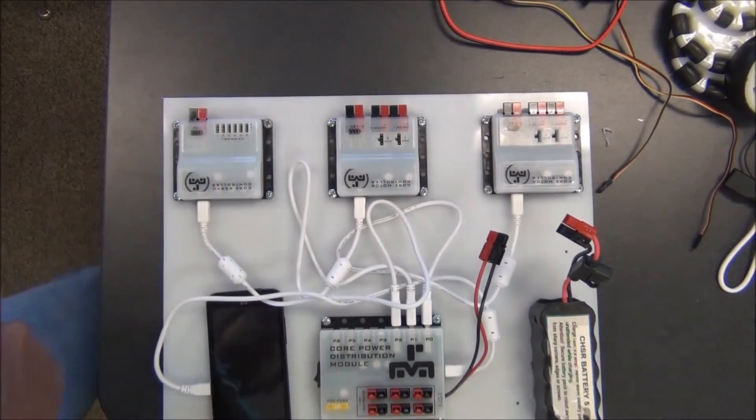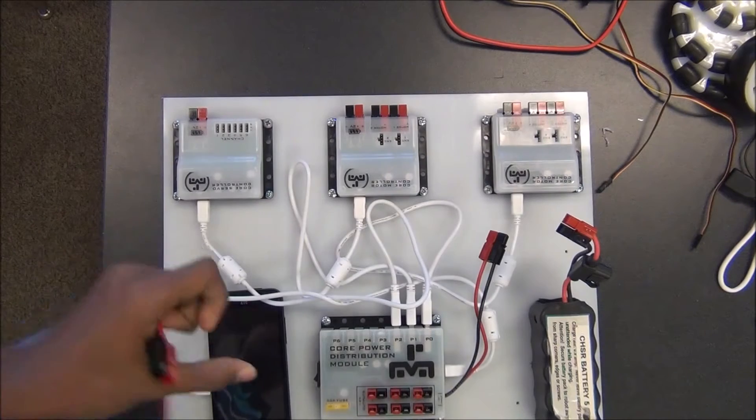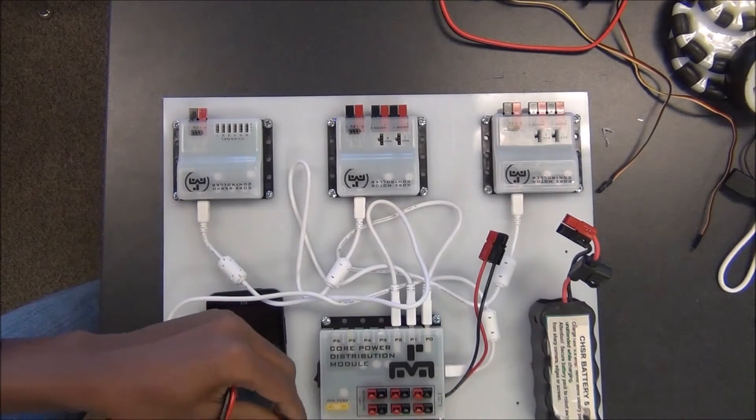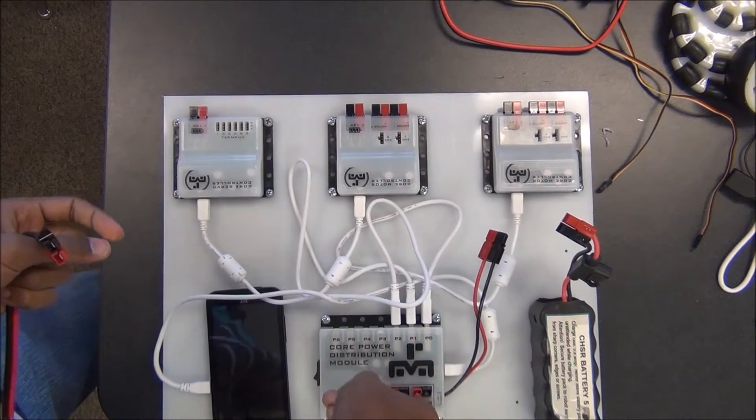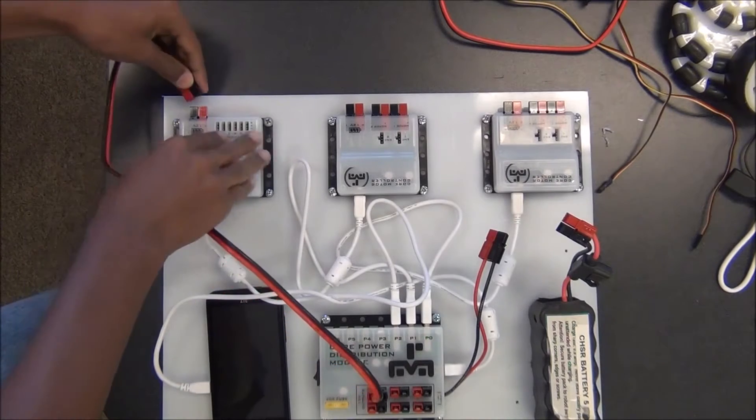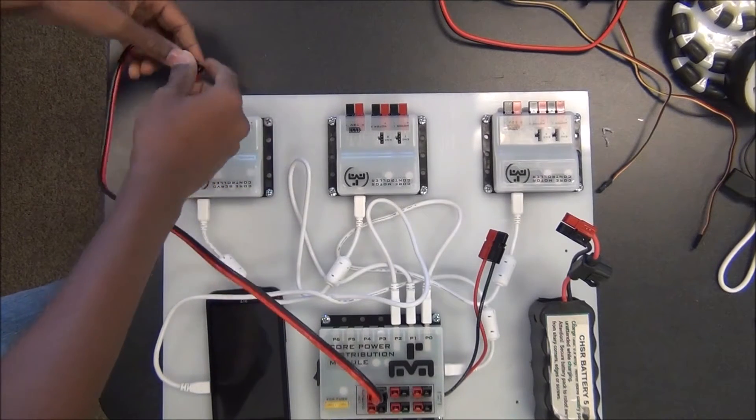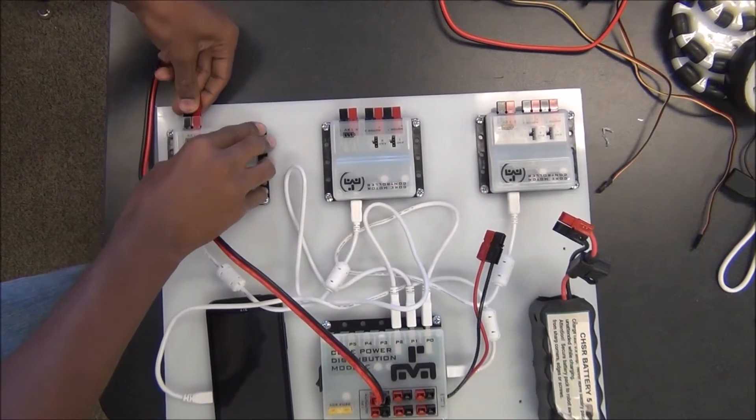Now I'm going to get a wire with Anderson power pole connectors on either end. I'm going to plug one end to the power out of the core power distribution module and the other end to the servo controller.